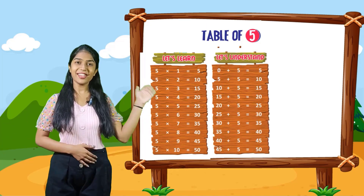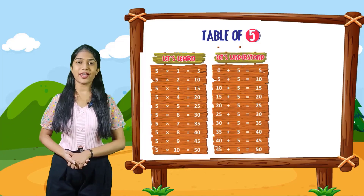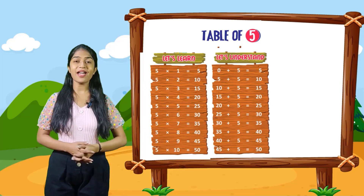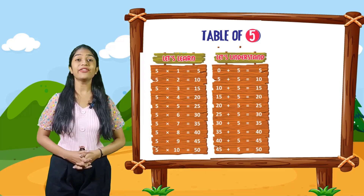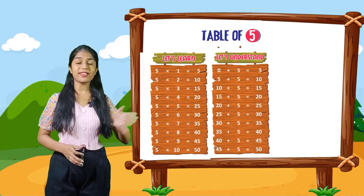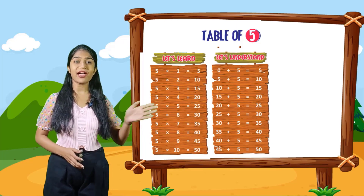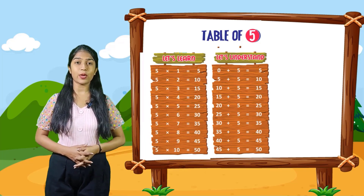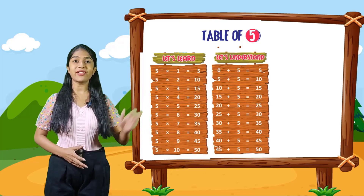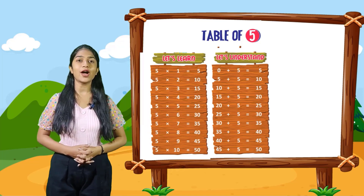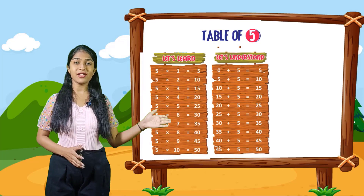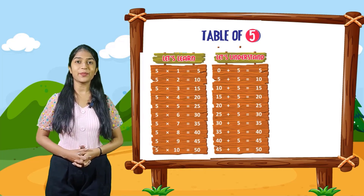Now let's understand. 0 plus 5 is equal to 5. 5 plus 5 is equal to 10. 10 plus 5 is equal to 15. 15 plus 5 is equal to 20. 20 plus 5 is equal to 25. 25 plus 5 is equal to 30. 30 plus 5 is equal to 35. 35 plus 5 is equal to 40. 40 plus 5 is equal to 45. 45 plus 5 is equal to 50.